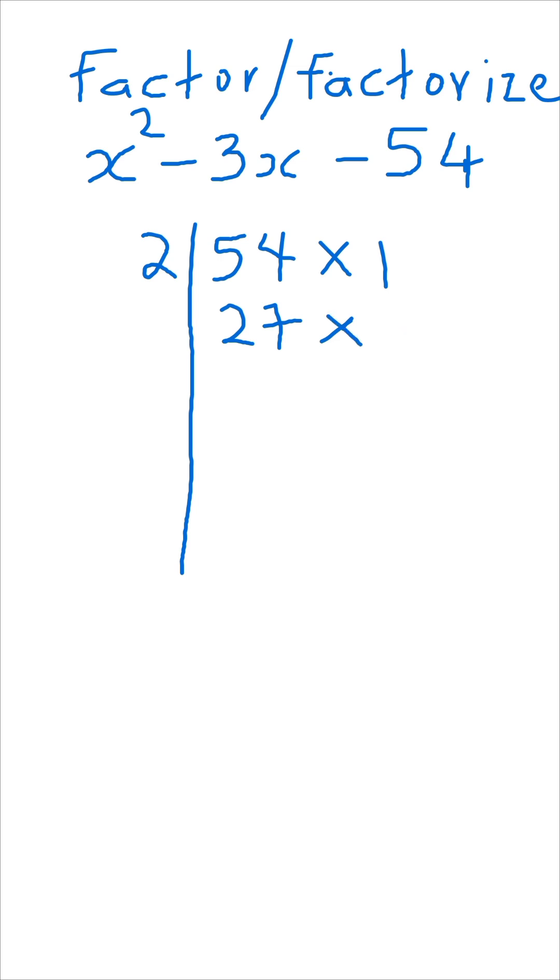27 times 2 will also give us 54. The next number that 27 can divide will be 3. So 27 divided by 3 is 9, 9 times what will give us 54 is 6.